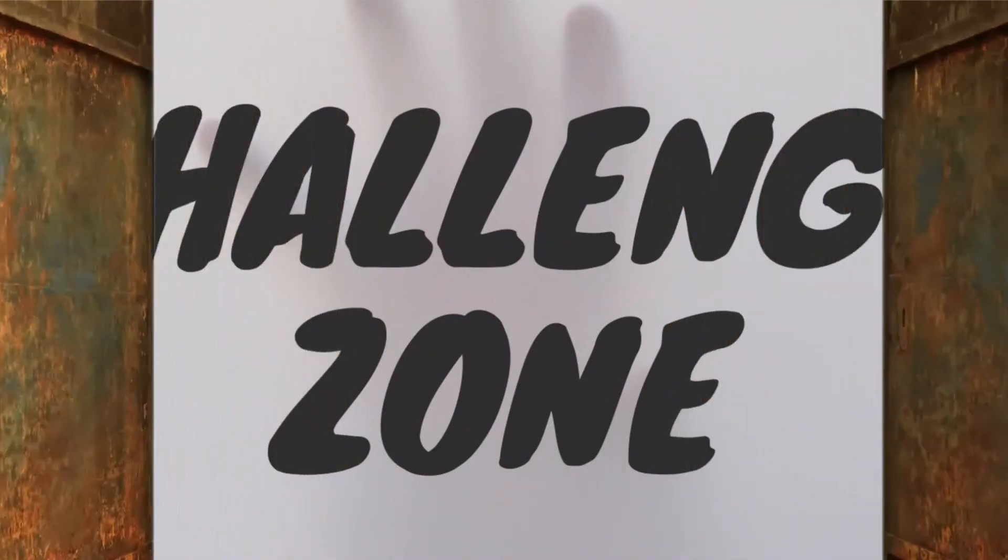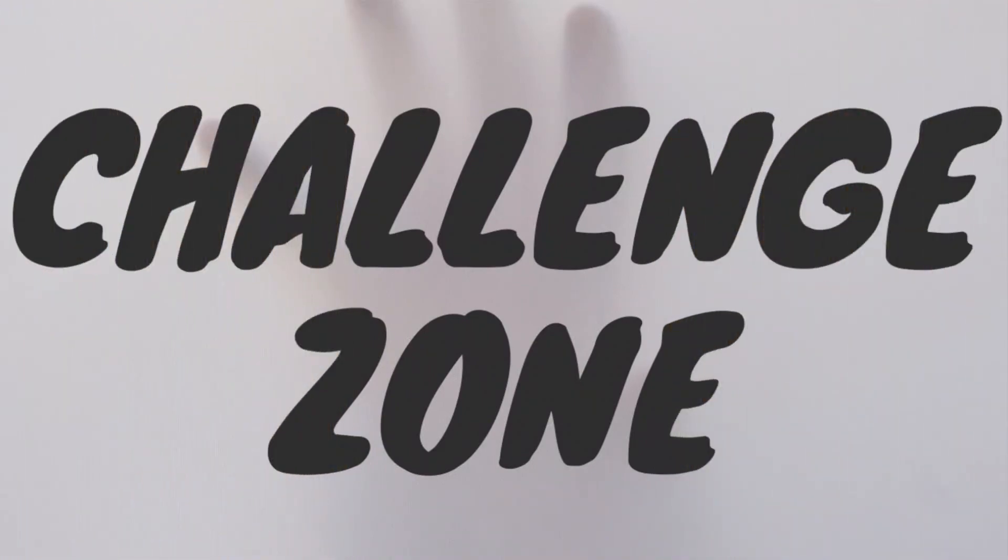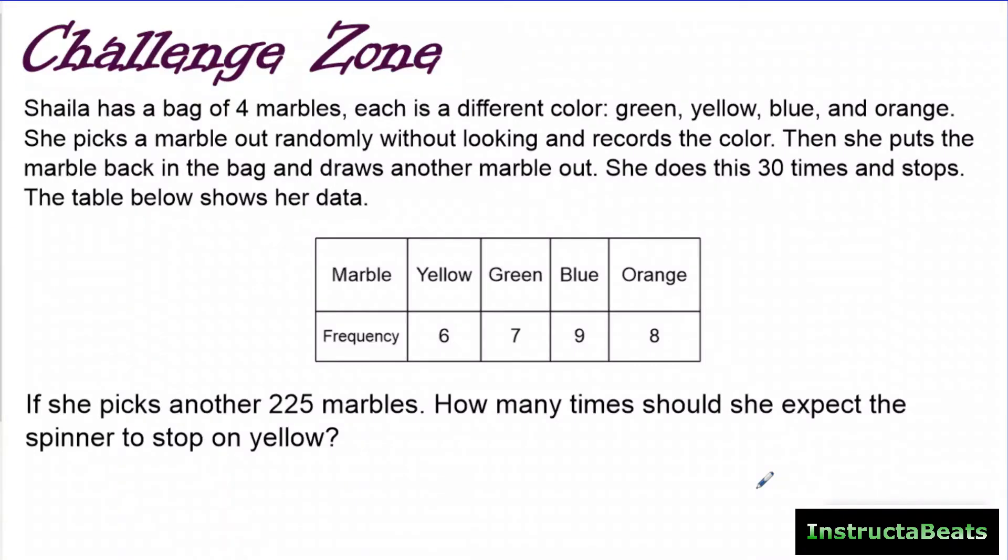Now it's time to enter the challenge zone. So challenge zone, if you have not been with us, this is where you take the basic knowledge that we're doing, and you try to take it to the next level. You're going to have to bring something with you to the challenge zone to be able to answer this question. So it says, Shayla has a pack of four marbles. Each is a different color: green, yellow, blue, and orange. She picks a marble out randomly without looking, records the color, just like we had our data sheet for our experiment, she's doing the same thing. Then she puts some marble back in the bag, and she draws out another marble randomly without looking. She does this 30 times and stops.